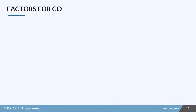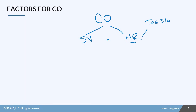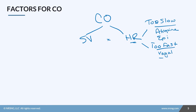Cardiac output equals stroke volume times heart rate. We can quickly affect cardiac output by influencing the patient's heart rate. For a heart rate that's too slow, we can give atropine — an anticholinergic — or sympathomimetics like epi to increase it. If the heart rate is too fast, we can use vagal maneuvers like coughing or bearing down, treat the underlying cause such as anxiety or dehydration, or consider cardioversion for a significant issue.